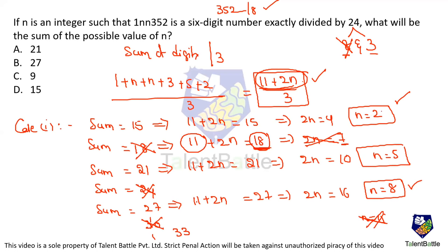So what are the possible values? 2 is possible, 5 is possible, and 8 is possible. The question asks for the sum of possible values. 2 plus 5 is 7, and 7 plus 8 is 15. So the answer for this question is Option D, 15.